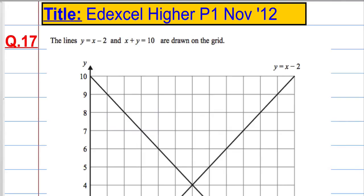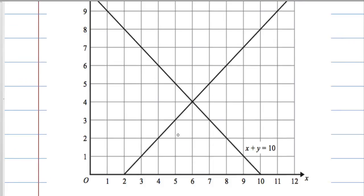All right, question 17. The lines y equals x minus 2, that's it there, and x plus y equals 10 is there, are drawn on the grid.